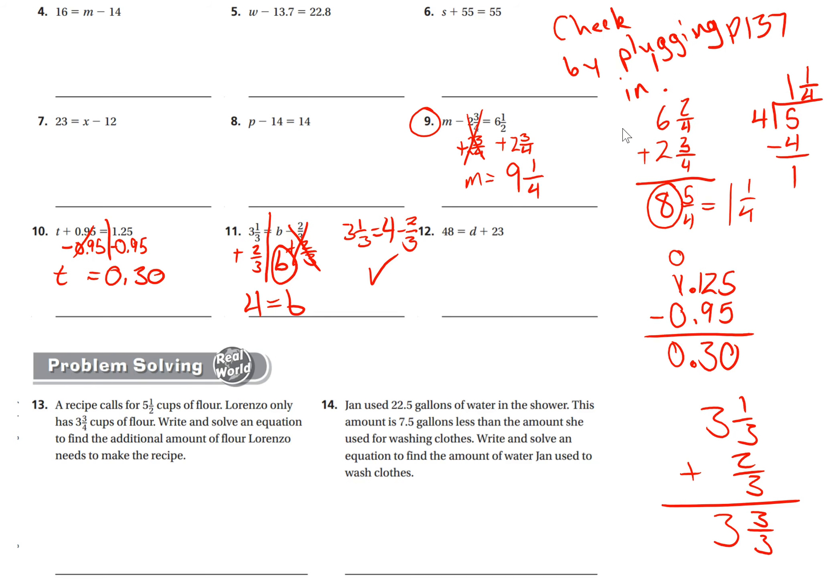Okay, let's go to the word problems. The recipe calls for five and a half cups of flour. Lorenzo only has three and three-fourths cups of flour. Write and solve an equation to find the additional amount of flour Lorenzo needs to make the recipe. So the recipe calls for five and a half cups. Lorenzo only has three and three-fourths cups.